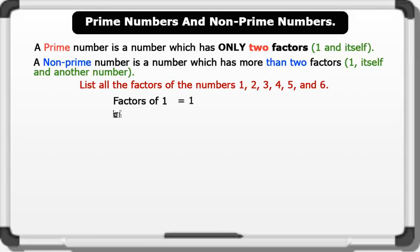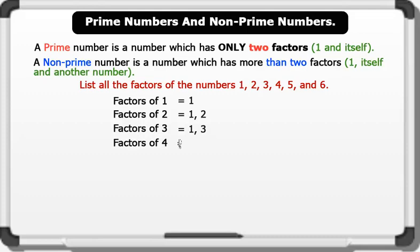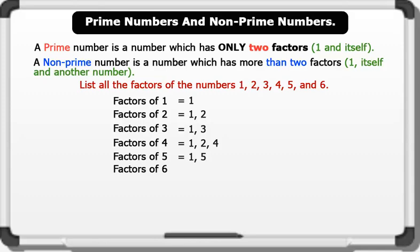Factors of 2 are 1 and 2. Factors of 3 are 1 and 3. Factors of 4 are 1, 2, and 4. Factors of 5 are 1 and 5. Factors of 6 are 1, 2, 3, and 6.